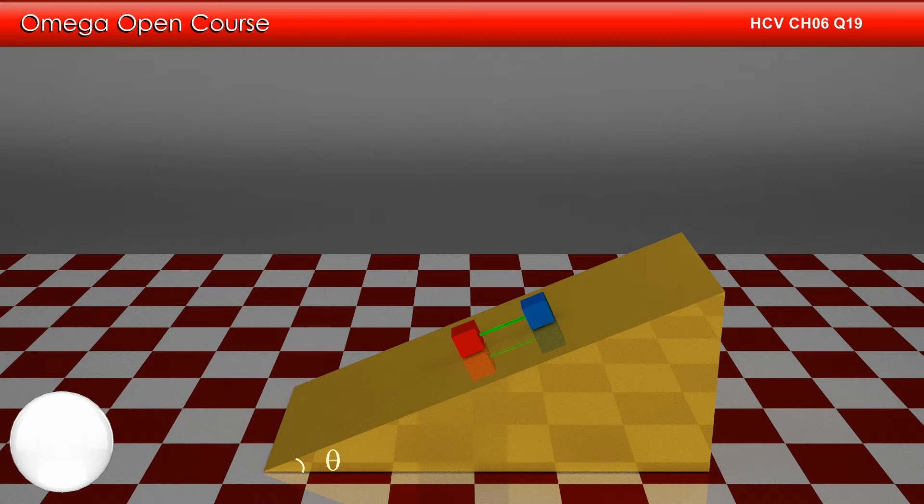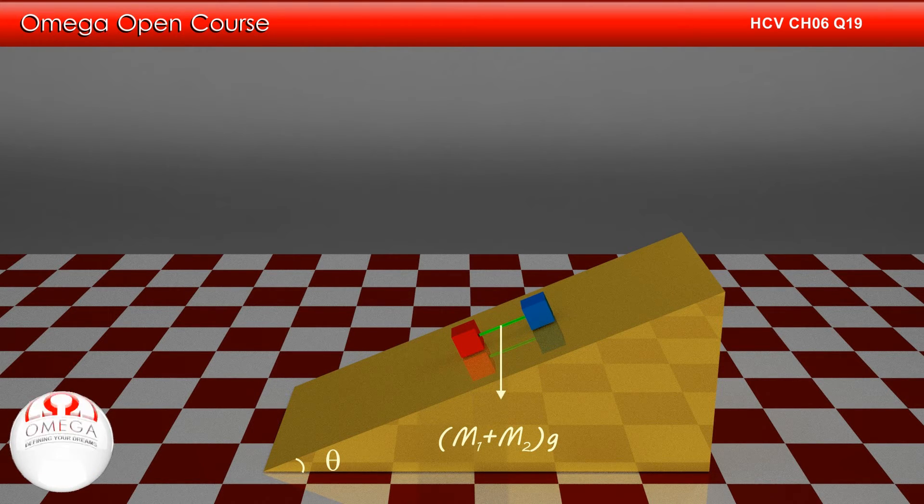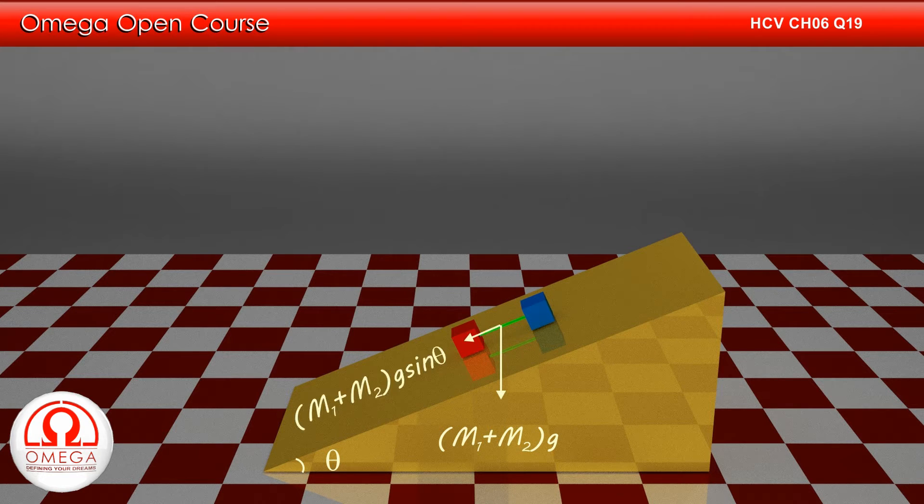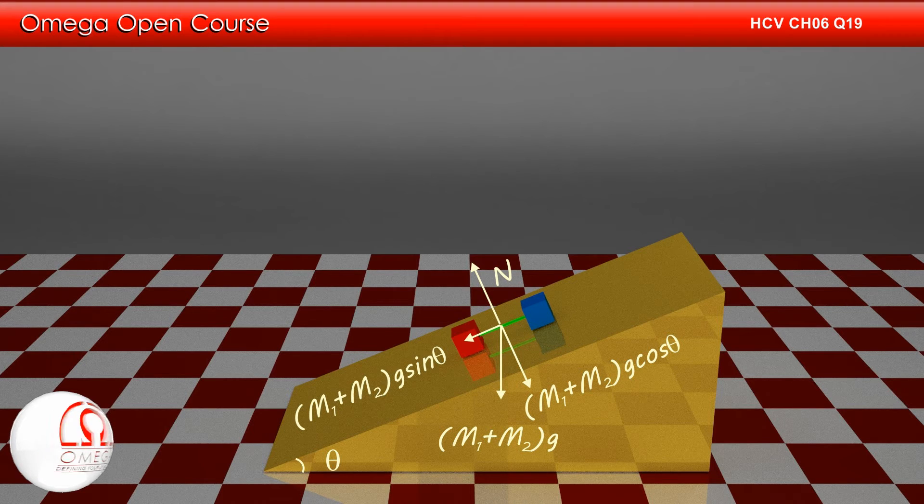If we draw the free body diagram of the system, gravitational force of (M1+M2)g acts in vertically downward direction whose component along the incline is (M1+M2)g sin theta and perpendicular to the incline is (M1+M2)g cos theta. Normal contact force N acts perpendicular to the incline and friction with magnitude mu N acts up along the incline.